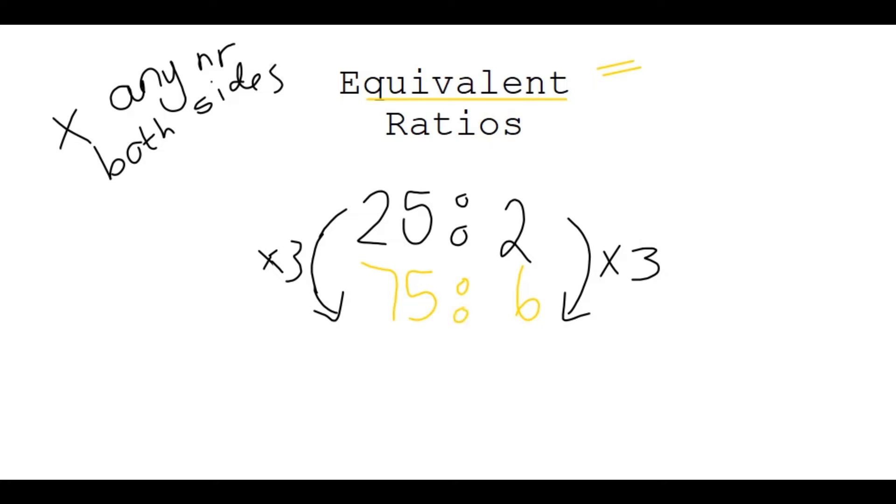Now note that I can also divide on both sides as long as I divide by the same number. However, there are no common factors of 25 and 2. So it has to be a common factor as well when you divide.